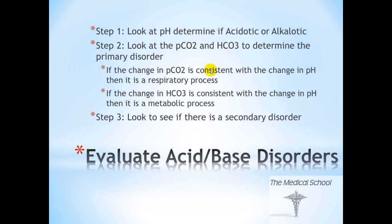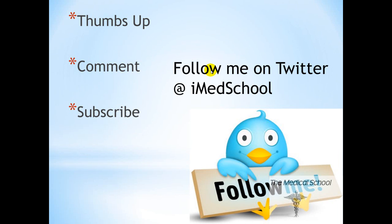We have just covered the basics of acid-base disorders. Here again are the basic steps to approach any acid-base disorder, no matter how complicated. Always determine the pH — if it's acidotic or alkalotic. Then look at the pCO2 and bicarb to determine the primary disorder. Then look to see if there is a secondary disorder. Always calculate your anion gaps, always correct for albumin, look at your urine anion gap for non-elevated metabolic acidosis, and look at your urine chloride for metabolic alkalosis. Look at the history and presentation of the patient to really tease out the condition causing their acid-base disorder. This is Rhys from The Medical School. If you liked this video, give it a thumbs up, comment, and subscribe.